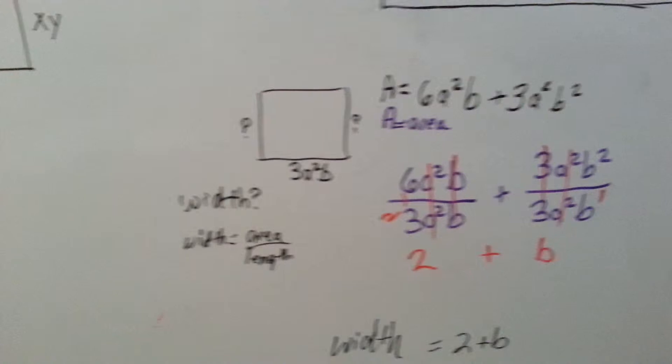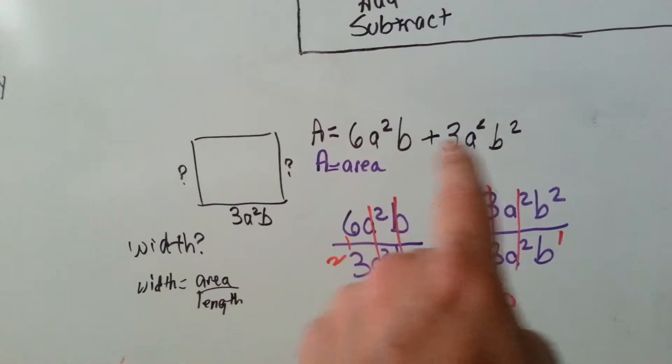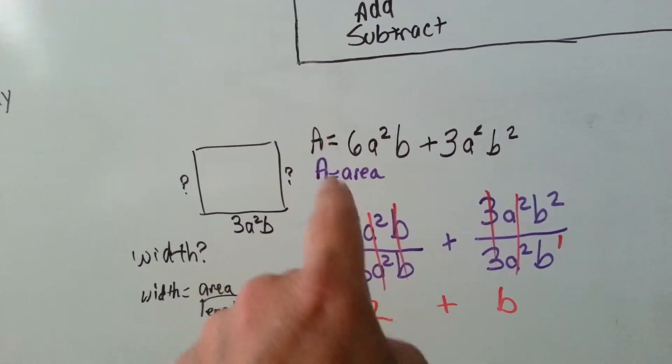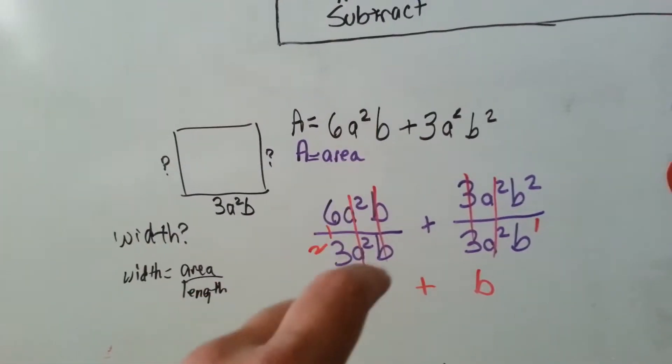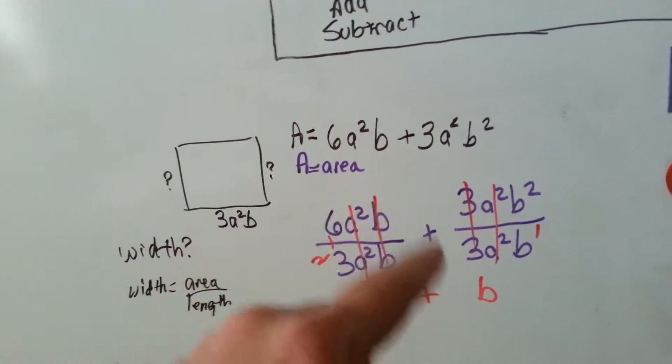Alright, let's look at this example. We know that this side of the square is 3a squared b, and we know that this is the area. Okay, A equals area. We're going to split this into two different sections from the plus sign to make it easier.